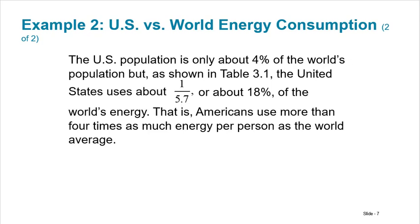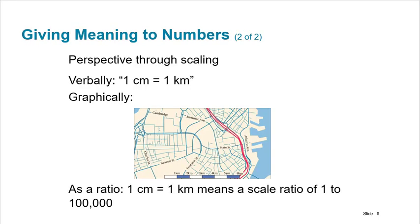Now the United States uses about 1 over 5.7 or about 18% of the world's energy. So that is Americans use more than 4 times as much energy per person as the world's average. Because we're only 4% of the population but we use 18% of the world's energy. So that tells us that we're energy hogs when it comes to the world.